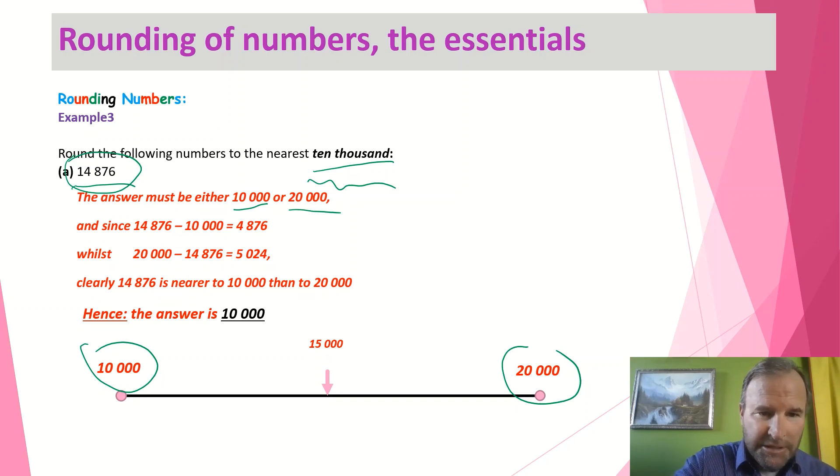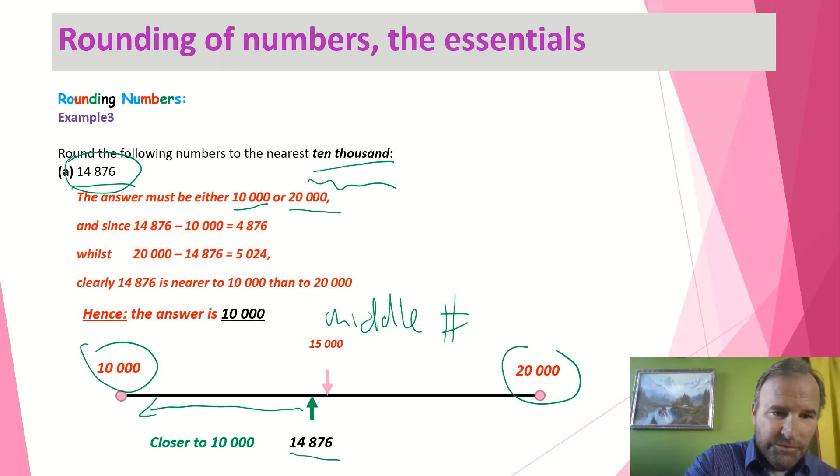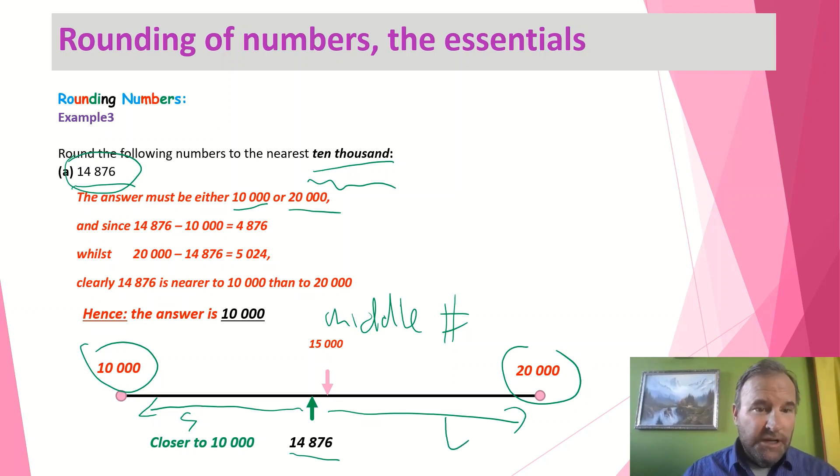Putting in that number, we can see it's approximately there, 14,876. So you can see that's much smaller and this distance here to 20,000, much larger. So it's closer to the 10,000 in terms of 14,000 than 20,000. Hence the answer is 10,000.